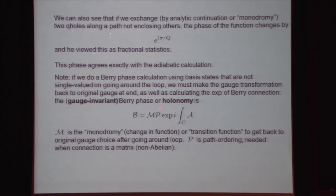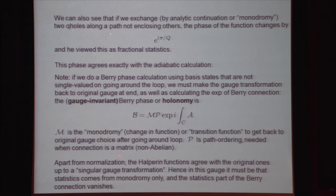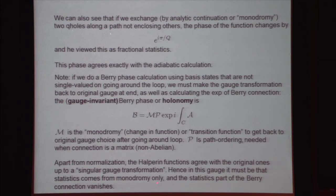The Halperin functions agree with the original ones, apart from normalization, up to a singular gauge transformation. Since the holonomy is constructed to be independent of this kind of transformation, in the Halperin gauge the previous result must still hold. It must be that in this gauge the statistics comes entirely from the monodromy and the Berry connection itself vanishes everywhere on the path. That's why we get the same result.